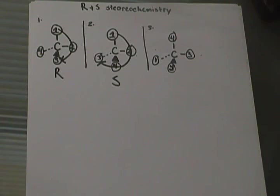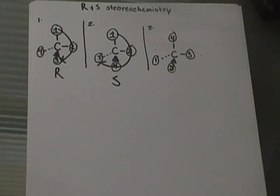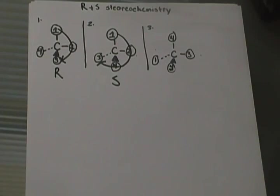Traditionally, what you do is you look down the fourth group and rotate the molecule to put the fourth group behind you. But it's much more difficult for students to grasp that because you're dealing with 3D objects and placing them in your mind. So this is just a way that we can compensate for not doing that. Whenever it's coming out to you, you draw your curved line from one to two to three, and whatever stereochemistry that is, you switch it.